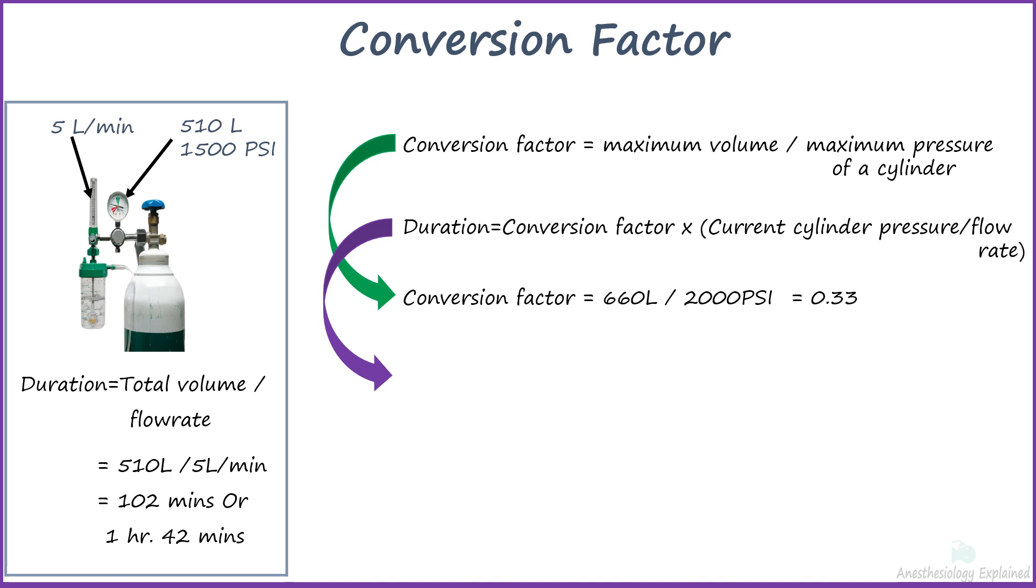Let's take the same example from the previous slide. Using cylinder gauge pressure as 1500 psi and the flow rate as 5 liters per minute, we get 0.33 times 1500 divided by 5, which equals 99 minutes or 1 hour and 39 minutes, which is the same time. But it is advised to use the conversion factors the manufacturers provide.